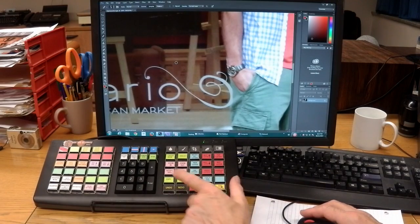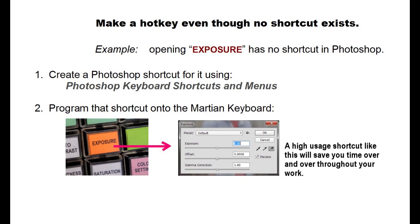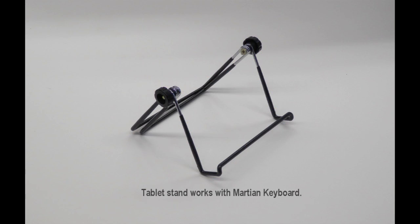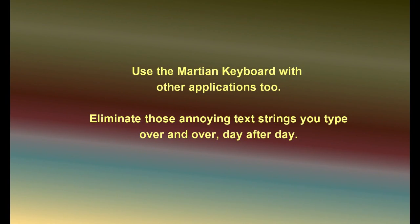Magnify 100%, zoom out — make a hotkey even though no shortcut exists. For example, opening Exposure has no shortcut in Photoshop. Create a Photoshop shortcut for it using Photoshop's Keyboard Shortcuts and Menus, then program that shortcut onto the Martian keyboard. A high-usage shortcut like this will save you time throughout your work. For even faster accessibility, you may want to prop the Martian keyboard using an inexpensive tablet stand.